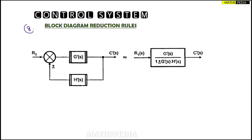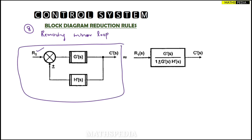In this video we'll be discussing the eighth rule, which is removing the minor loop. A minor loop is this part here — observe carefully. We have the input R(s), the output, the forward path transfer function, and the feedback path transfer function H'(s). This is a minor loop. The summing point has only one feedback signal connected, so we can remove the summing point and combine into one block, reducing confusion.